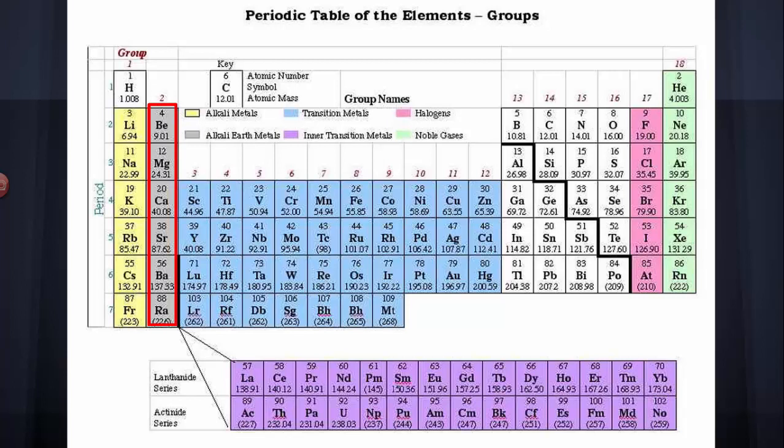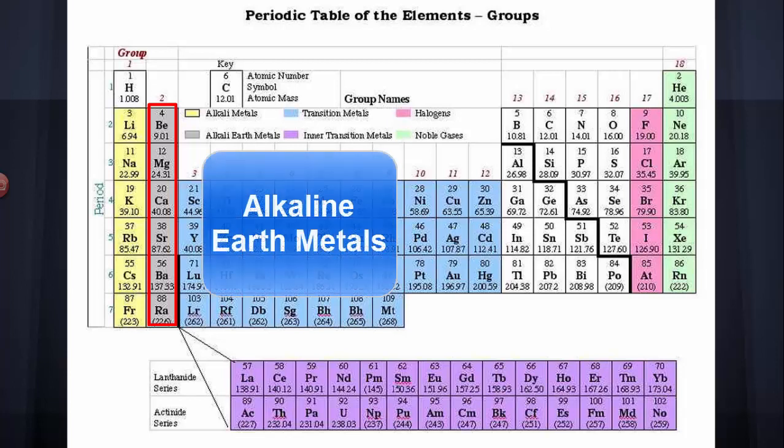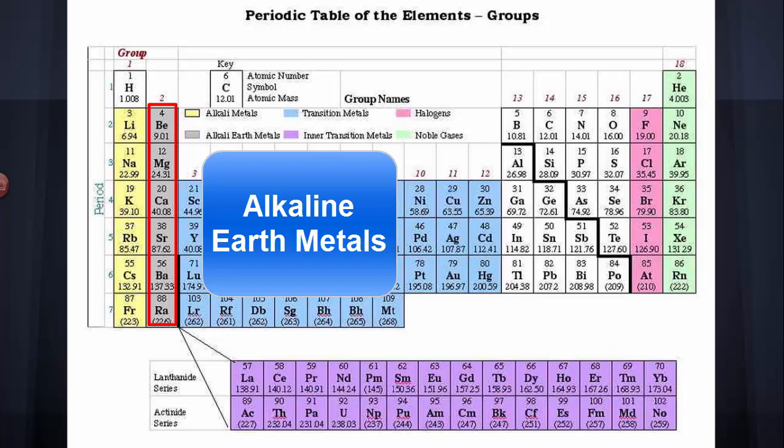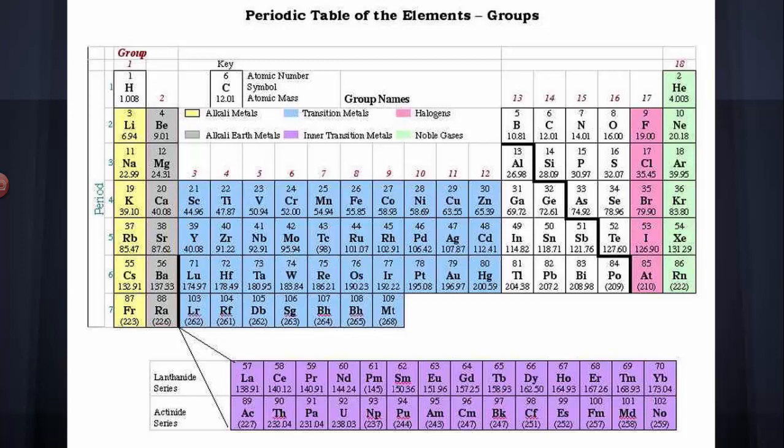Immediately next to them in group 2 are beryllium, magnesium, calcium, strontium, barium, and radium. Those are called the alkaline earth metals, and we find them in biology quite a bit. Magnesium and calcium especially are very important metals in biology. Barium and radium are used biologically but not normally found in large amounts in living things.